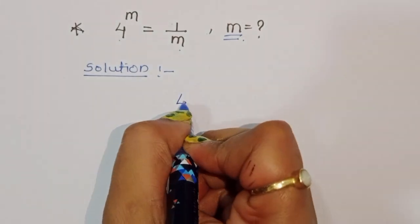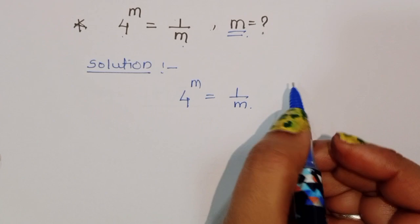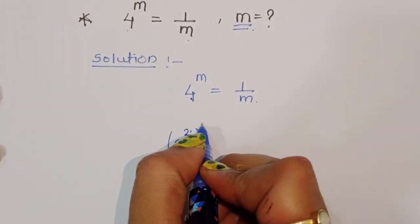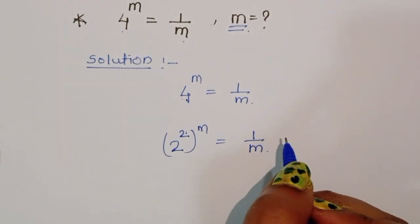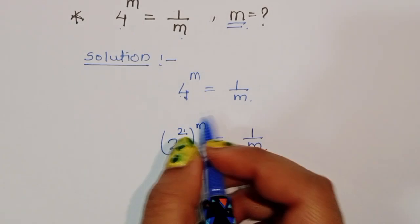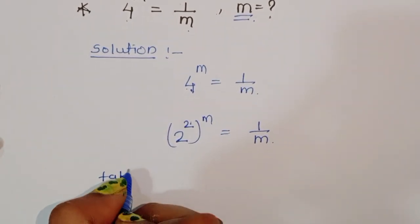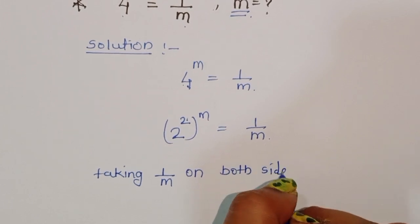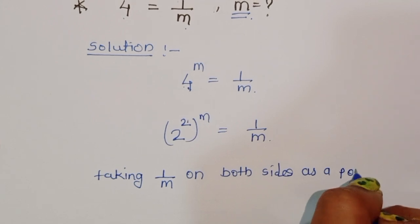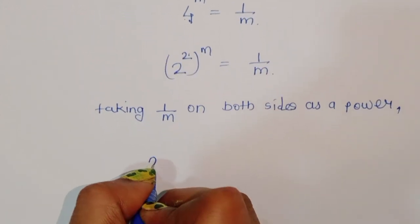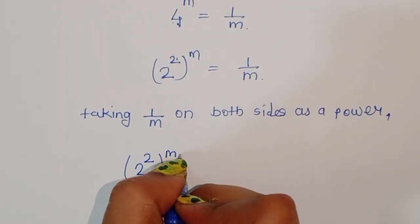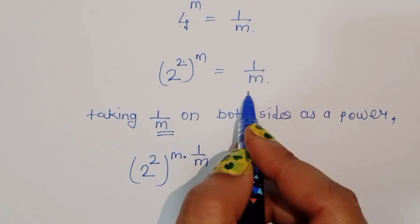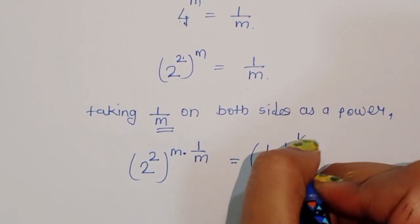First, what is given: 4 power m is equal to 1 upon m. We can write 4 as 2 power 2. So, 2 power 2, power m is equal to 1 upon m. Now, we take 1 upon m as a power on both sides. We get 2 power 2m times 1 upon m, and 1 upon m is equal to 1 upon m, power 1 upon m.